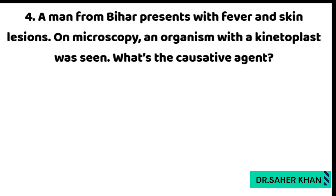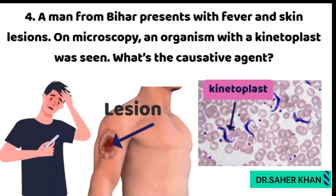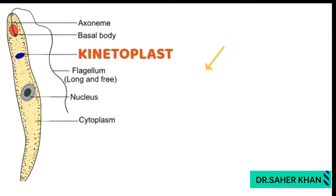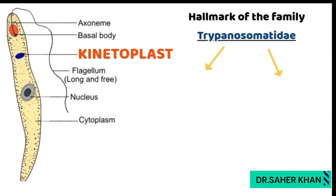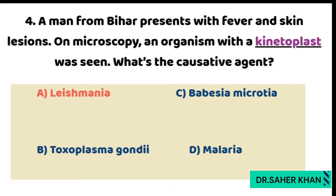The next question: a man from Bihar presents with fever and skin lesions; on microscopy, an organism with a kinetoplast was seen. What is the causative agent? The key clue here is the term kinetoplast. Kinetoplast is a unique structure containing extra-nuclear DNA, and it is the hallmark of the family Trypanosomatidae. The two important parasites in this family to remember are Leishmania and Trypanosoma species — both have the kinetoplast structure. Since Leishmania is listed in the options, the correct answer is Leishmania.